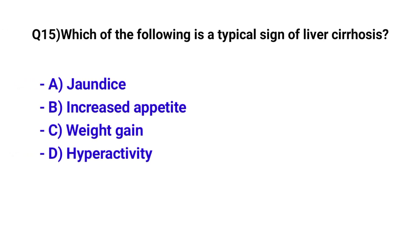Question number 15. Which of the following is a typical sign of liver cirrhosis? The correct option is A. Jaundice.